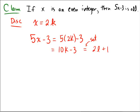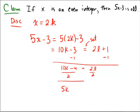Well, let's figure out what l is by solving for l. We can do that by subtracting 1 from both sides so that 10k minus 4 is equal to 2 times l. And then we can divide by 2 on both sides and that would yield that 5k minus 2 is equal to l.